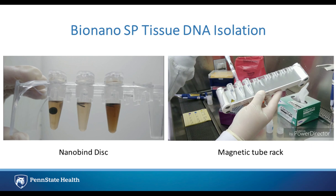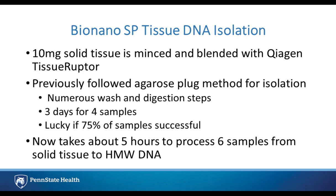The BioNano SP tissue DNA isolation protocol utilizes a nanobind disc to bind the DNA without shearing it in any way, allowing you to obtain high-molecular weight DNA that is at least 150,000 base pairs in length. It also uses a magnetic tube rack to bind the disc, which is paramagnetic, to the wall so that you can do easy buffer washing steps. This begins with approximately 10 milligrams of solid tissue that's minced and then blended. In stark comparison to previous protocols which used the agarose plug method, this has been vastly improved.